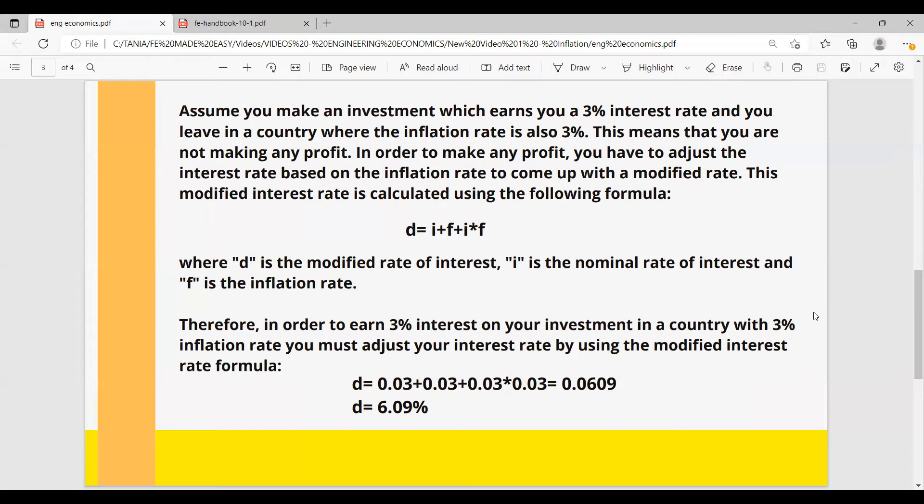So in order for you to earn 3% interest on your investment in a country with 3% inflation rate, you must adjust your interest rate using the formula we just talked about. So your interest rate should be equal to 0.03 plus 0.03 plus 0.03 times 0.03. So your interest rate should be 6.09% in order for you to earn the 3% interest on your investment in a country with a 3% inflation rate.